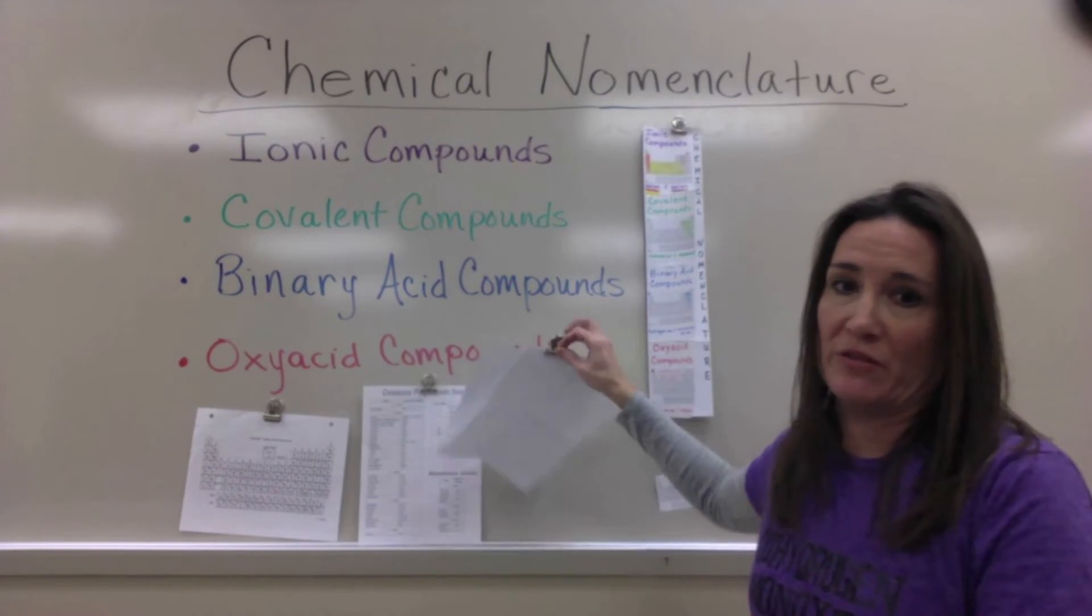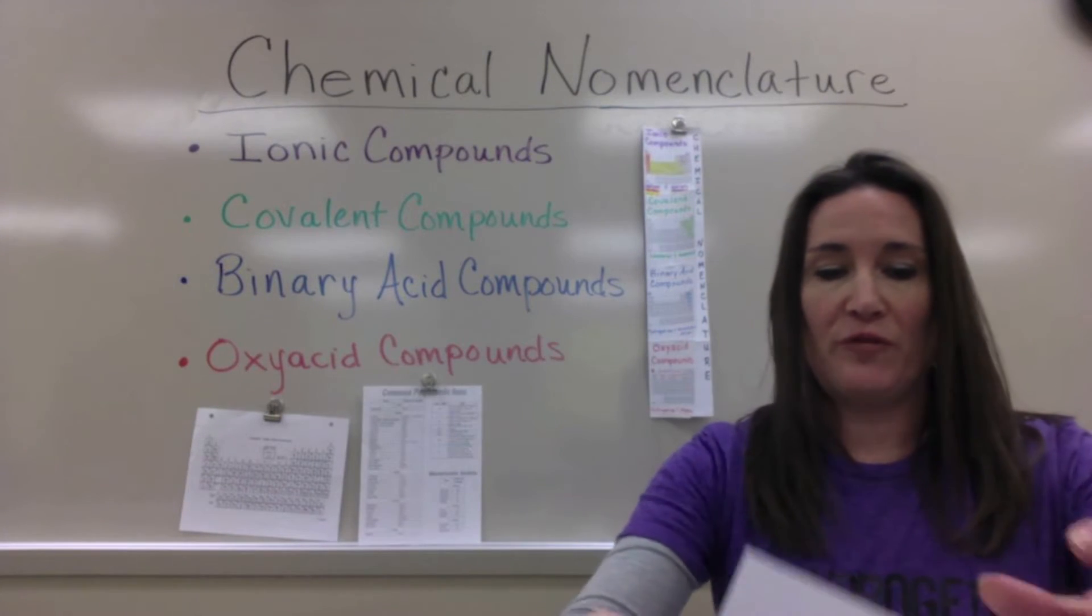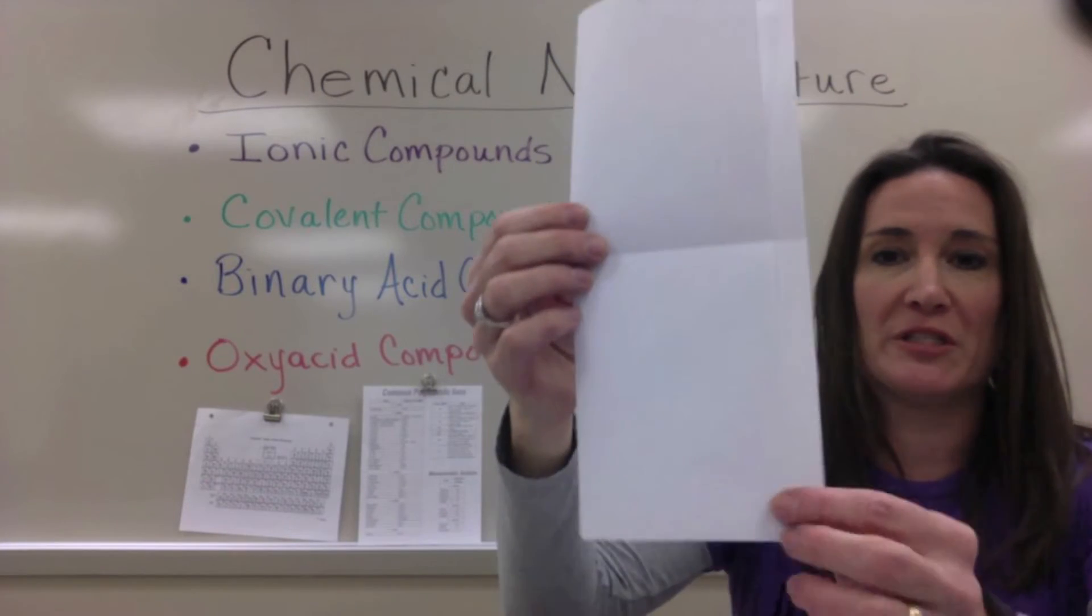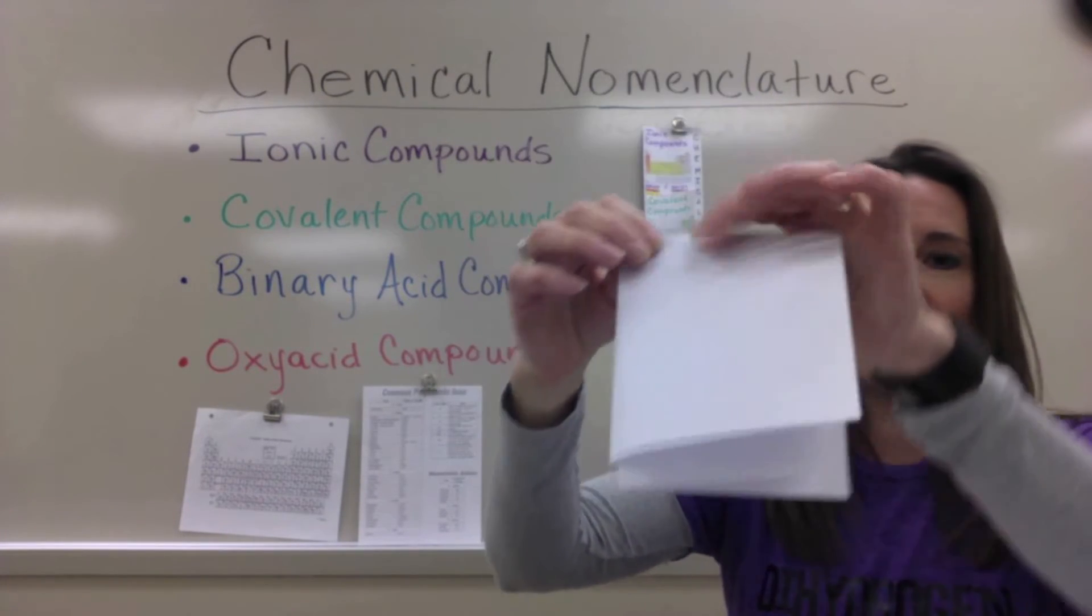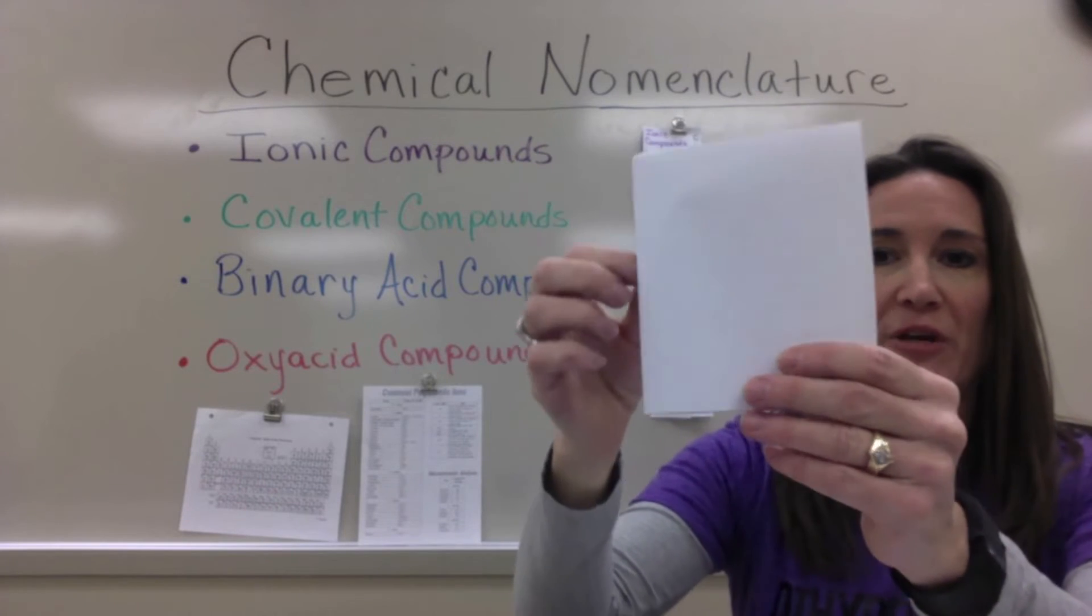So what you're going to need is two pieces of computer paper. You're going to fold both those sheets hot dog with a tab that's left at the end. And then after that you're going to take both sheets and fold them into a hamburger fold.